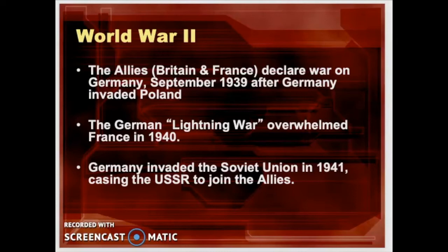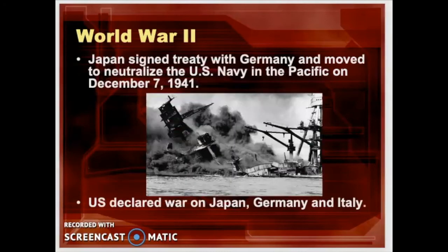Japan had signed a peace treaty with Germany, becoming part of the Axis of power between Germany, Italy, and Japan. Understanding that war with the United States was inevitable, Japan moved to neutralize the U.S. Navy in the Pacific on December 7, 1941, attacking the Pacific Fleet at Pearl Harbor and destroying many ships. Fortunately, the aircraft carriers were not there at the time. A day or two later, the United States declared war on Japan, Germany, and Italy.